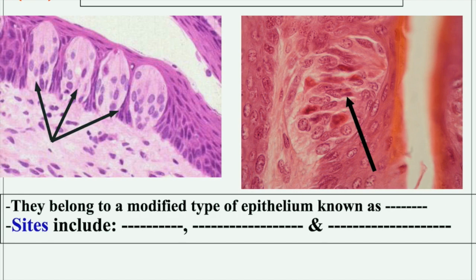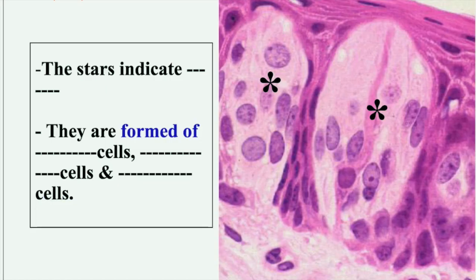The structures indicated are taste buds; they belong to a modified type of epithelium known as neuroepithelium. Their sites include four locations: tongue papillae, soft palate, epiglottis, and pharynx. The taste bud cells are identified by the shape and position of the nucleus: the basal cell is identified by its position; the gustatory cell by its more rounded and paler nucleus; and the supporting or sustentacular cell is characterized by the presence of a dark nucleus.